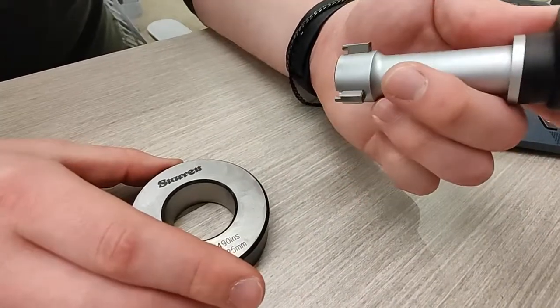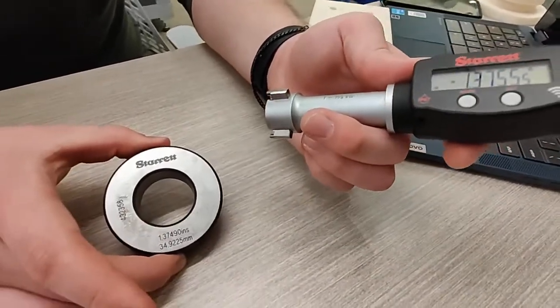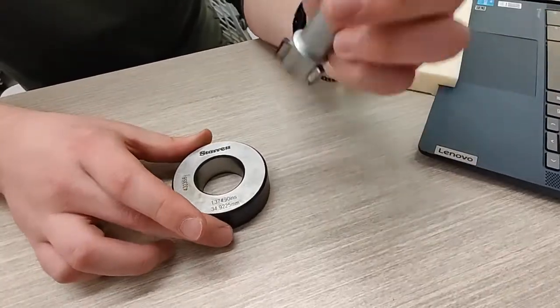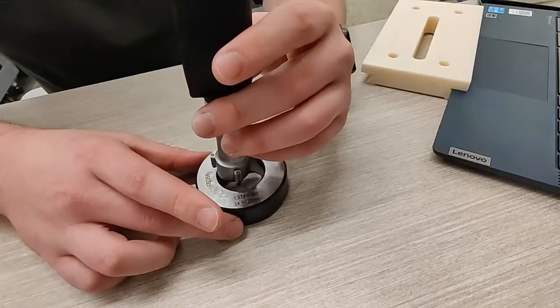We are going to use a calibrated ring gauge to zero this micrometer.